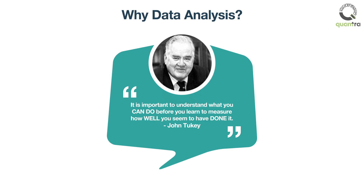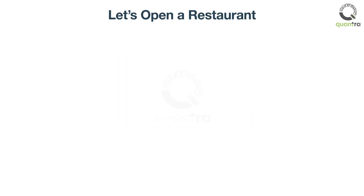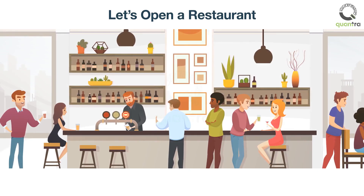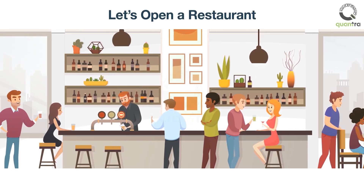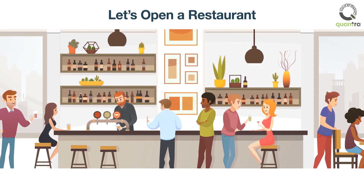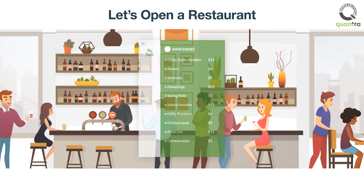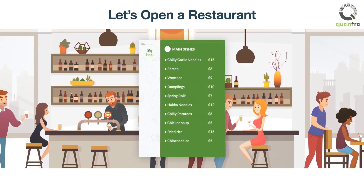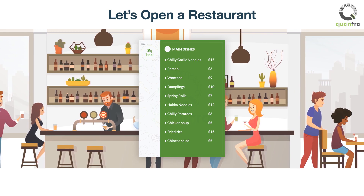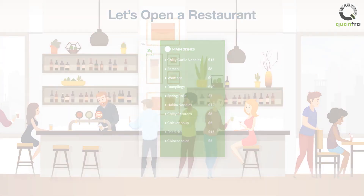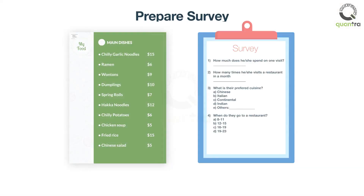Let's understand what he means through an example. Suppose you want to open a restaurant in a prime location and you want to decide on the menu and the preferred time during the day. For this, you conduct a survey shown on the screen.